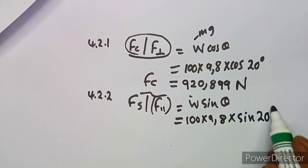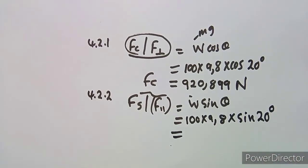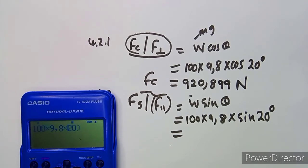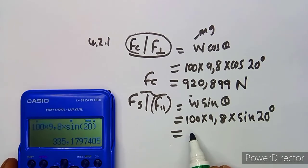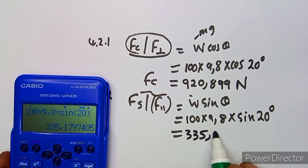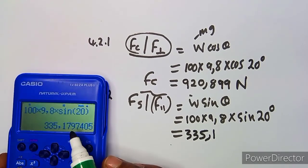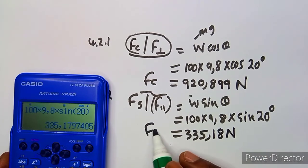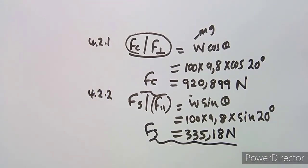The only change is that we now use sine 20° instead of cosine 20°. Calculating 100 × 9.8 × sin 20° gives approximately 335.18 N. Rounding to three decimal places gives 335.18 N. That is your F_s or parallel component.